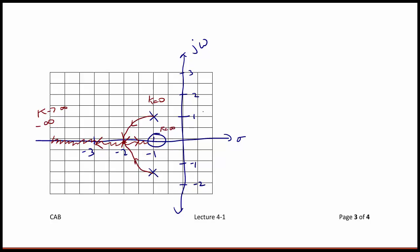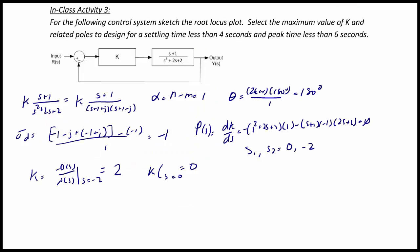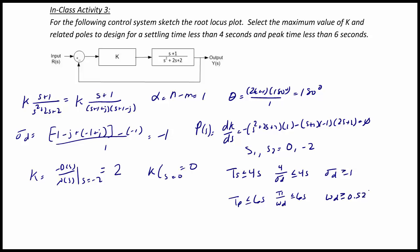Looking at our design constraints: the settling time is less than 4 seconds, so 4/sigma_d ≤ 4, meaning sigma_d ≥ 1. If the peak time is less than 6 seconds, then π/omega_d ≤ 6 seconds, or omega_d ≥ 0.524.